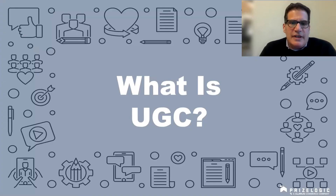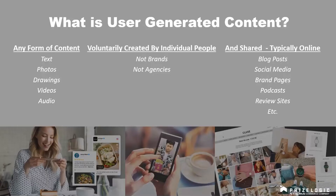So very quickly, what is UGC? Basically three parts: it's any form of content — text, photos, drawings, video, audio. We've done one where we had people do their best Chewbacca imitation. Any form of content that's voluntarily created by individual people. We're not paying them to do it, they don't work for a brand or an agency. We may motivate them to do it, but it's purely their choice. They create it and share it — typically online, on blog posts, social media, brand pages, podcasts — basically creating genuine, organic content, sometimes about the brand, sometimes not, but obviously our clients are most interested in the brand portion of it.